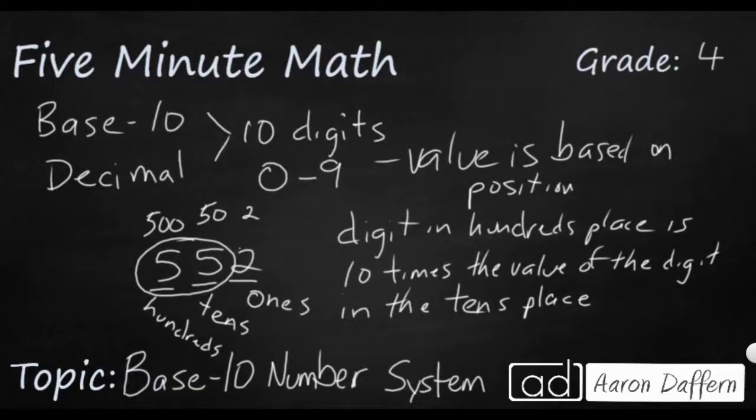Because think about it. One times 10, if you're moving over here to the left, is 10. And if you have 10 times 10, that's going to make 100. And most of you probably know that the next place is the thousands, right? How do you get thousands? You take your 100, and then you times it by 10. So every time you move over to the left, you get 10 times bigger.